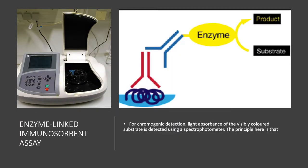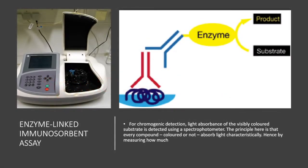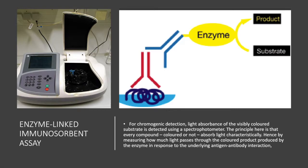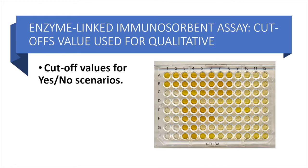The principle here is that every compound, colored or not, absorbs light characteristically. By measuring how much light passes through the colored product produced by the enzyme in response to the underlying antigen-antibody interaction, you can analyze the sample or specimen. You can use this principle to decide if there has been an antibody produced against an antigen, just as a yes or no.